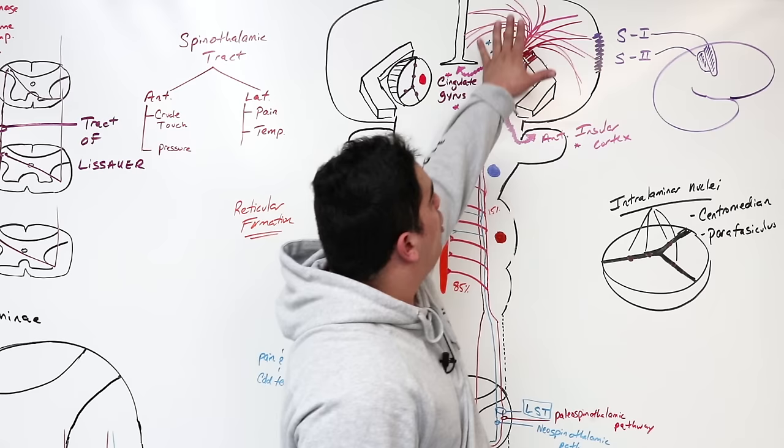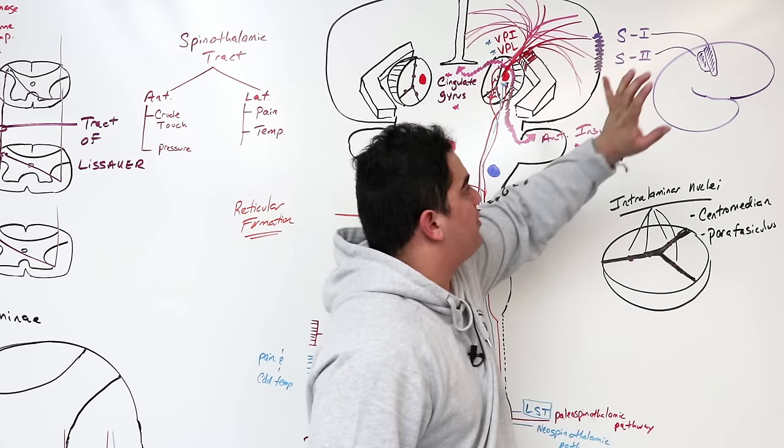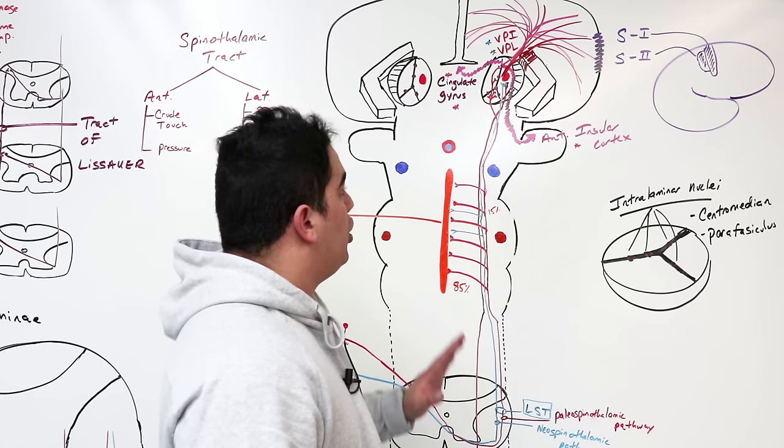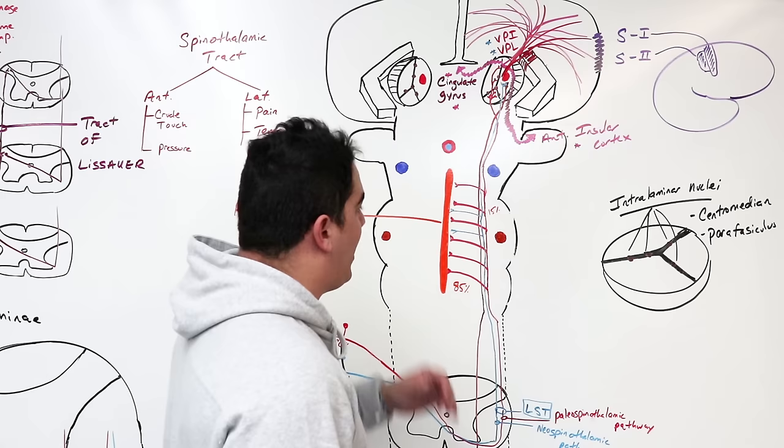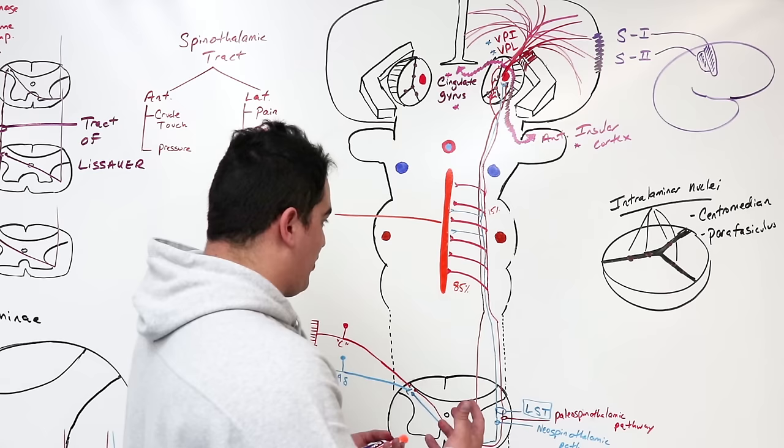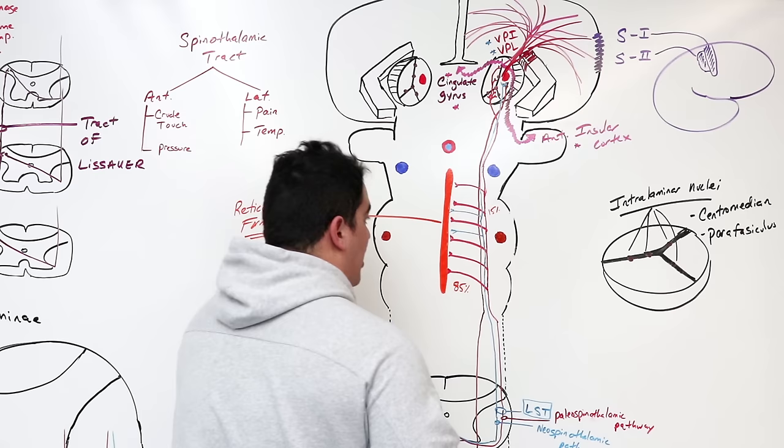So we have information going to the cerebral cortex — primary and secondary somatosensory cortex — with branches off to the cingulate gyrus and the anterior insular cortex. Now we have to come back to the C fibers, because along the way there are other components associated with the entire anterolateral system.